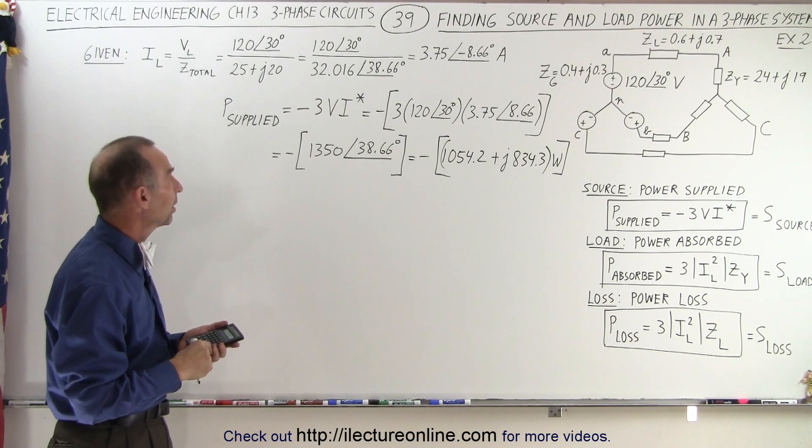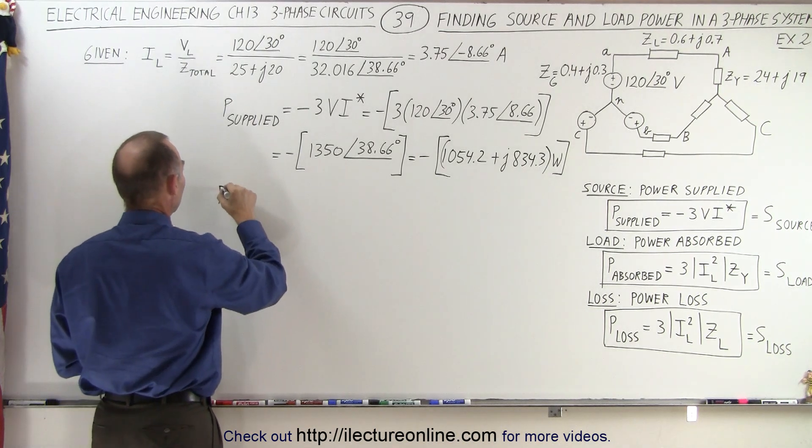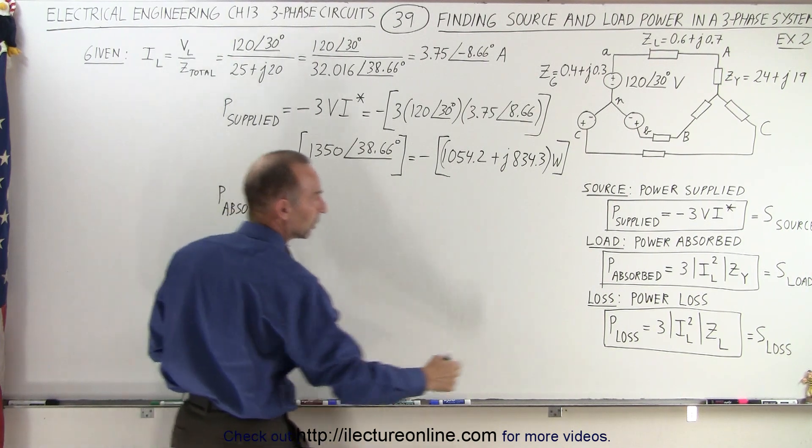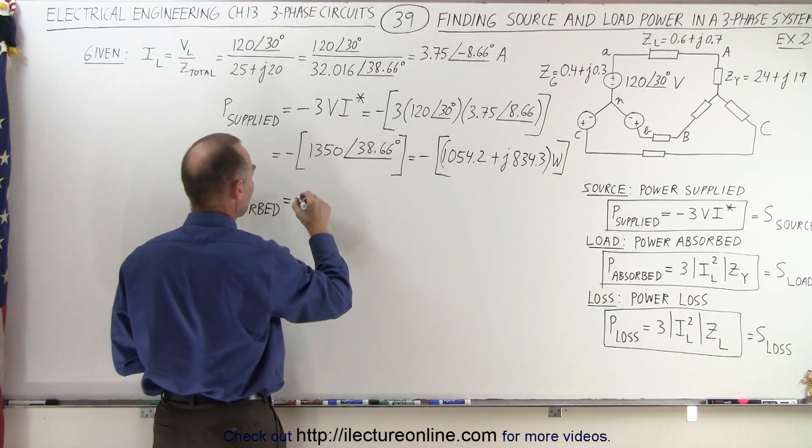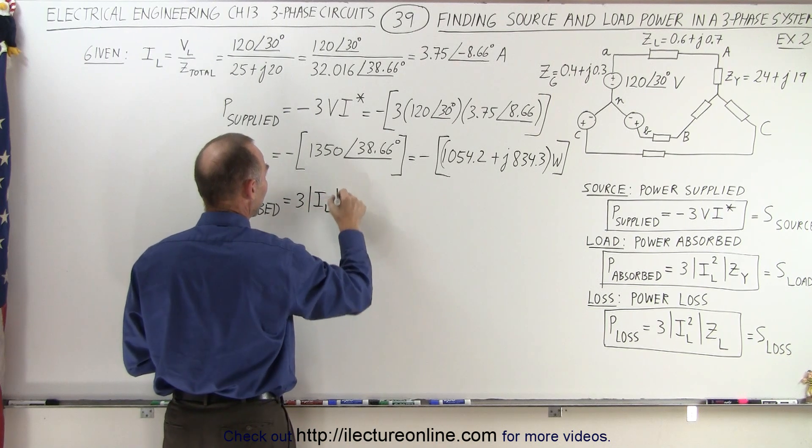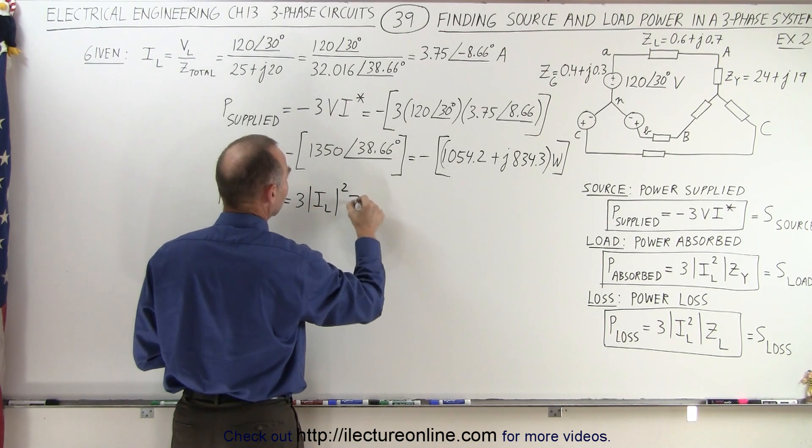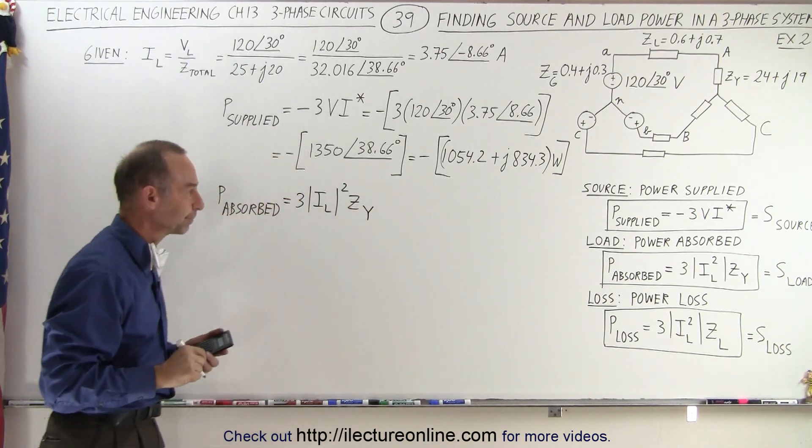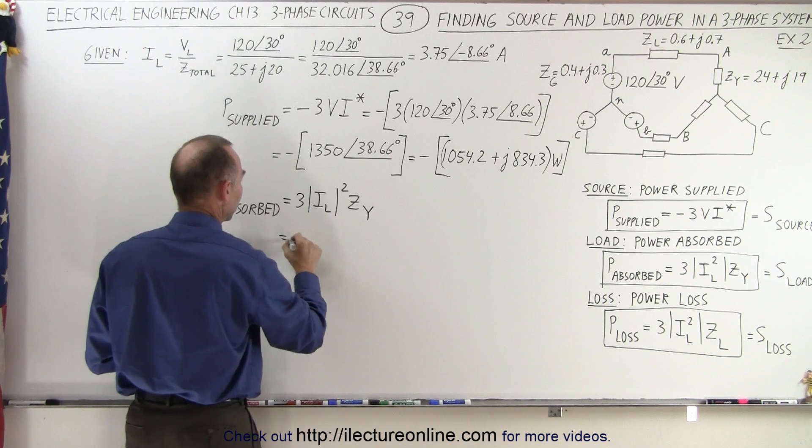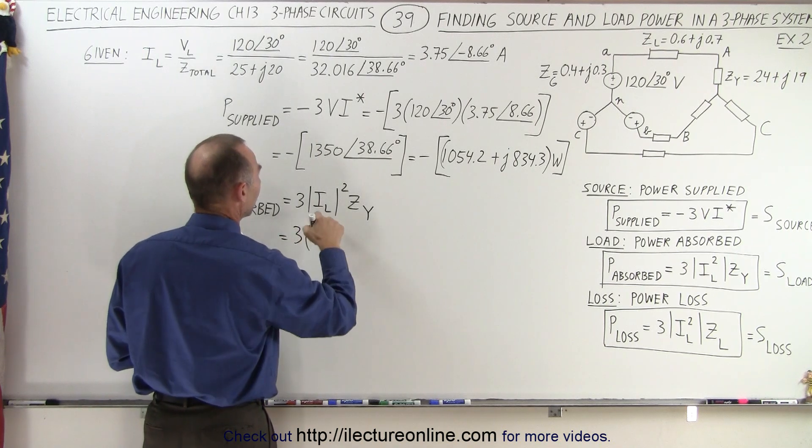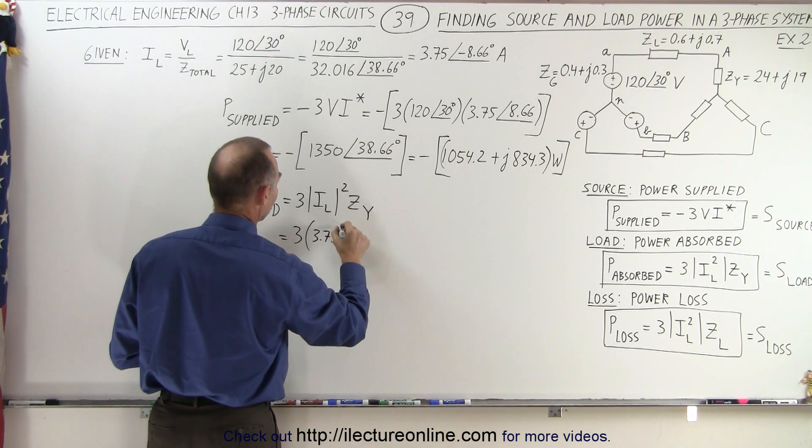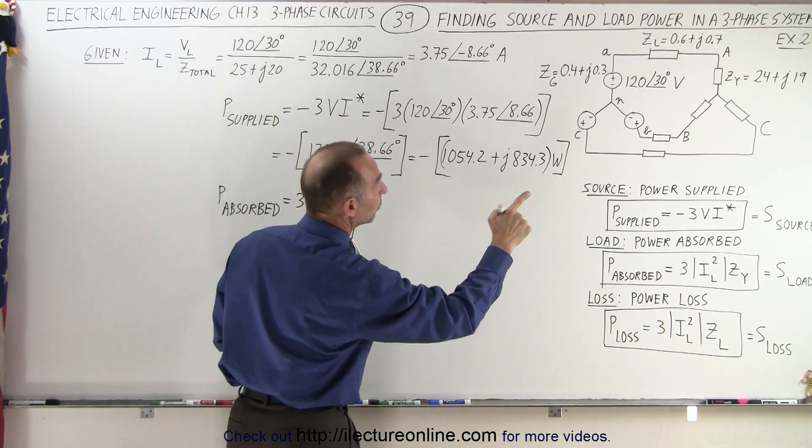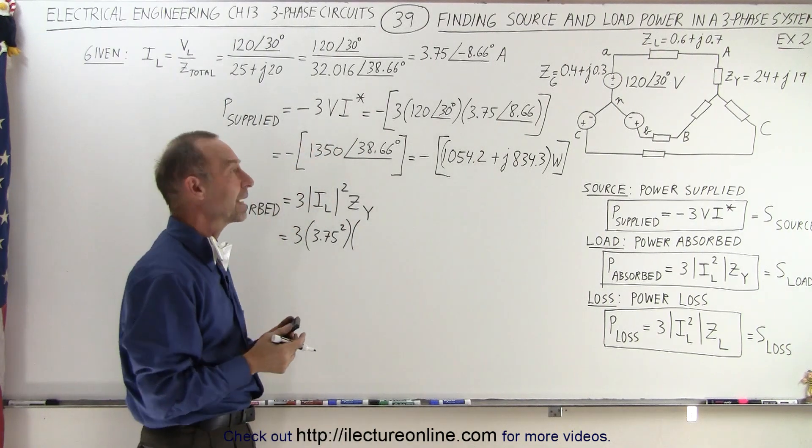Now let's have power absorbed by the load. That's going to be equal to the equation we use is for the three phases. Three times the magnitude of the line current squared multiplied times the impedance of the load. So it's the Y impedance. So this is equal to three times the magnitude of the current, 3.75 squared. And then we multiply that by the impedance. The impedance is going to be 24 plus j19.